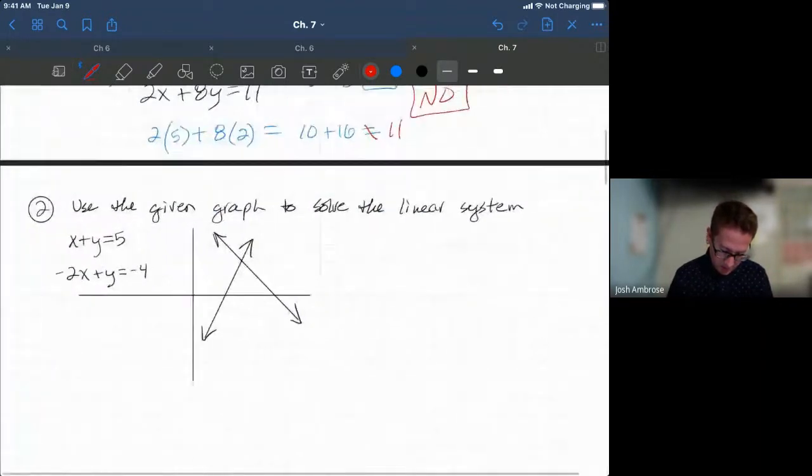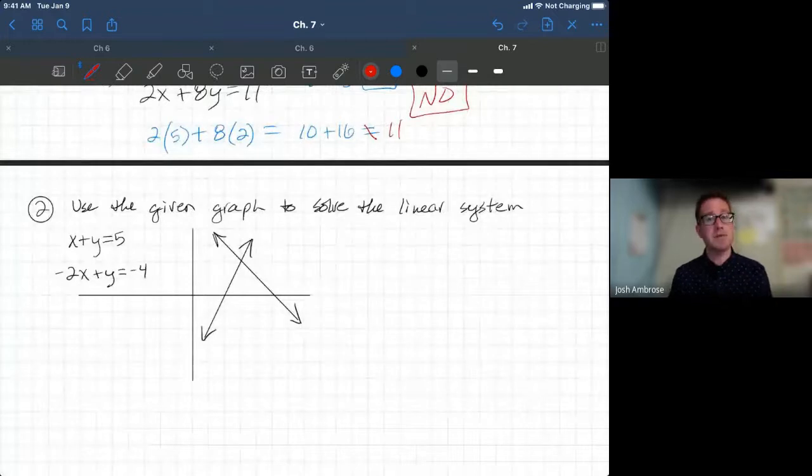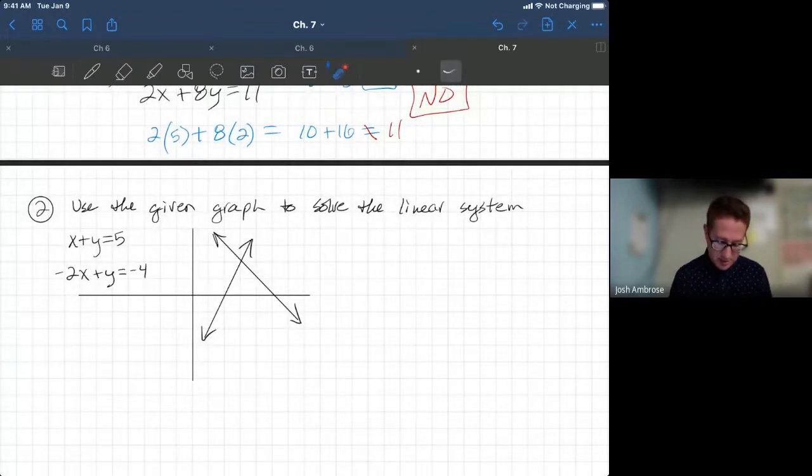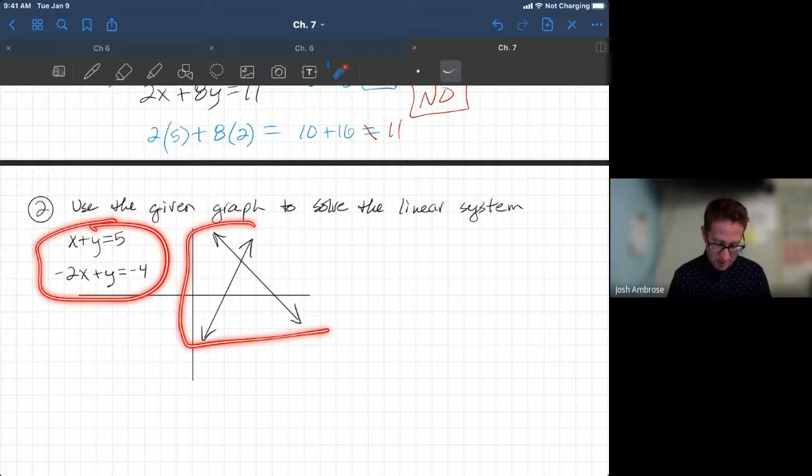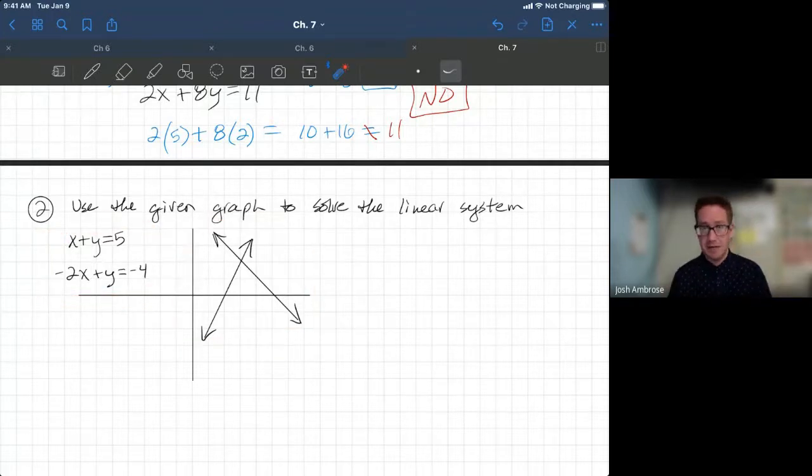All right, so our directions here. Use the given graph to solve the linear system. As I already stated, these equations make these graphs. So you don't even have to graph it. You just have to simply look at the graph and determine what is the solution. The solution is where they cross. So you need to just use the graph. Where are they crossing?